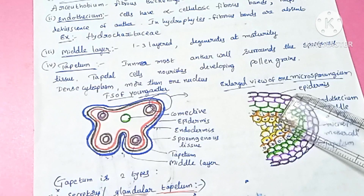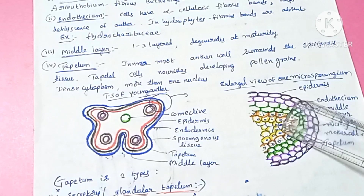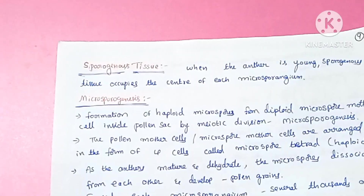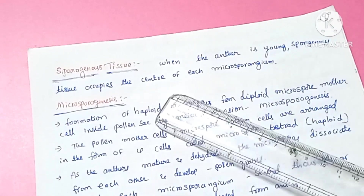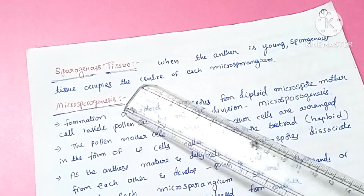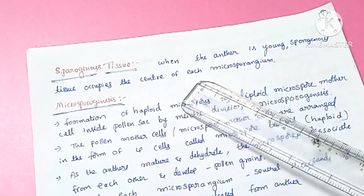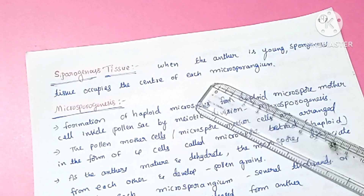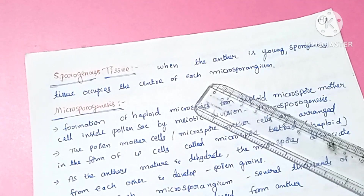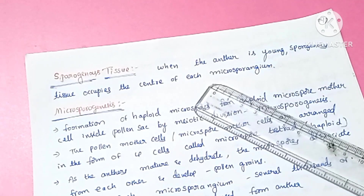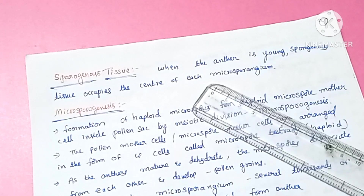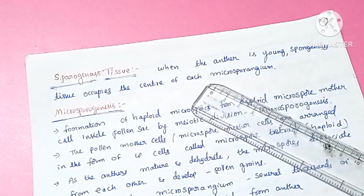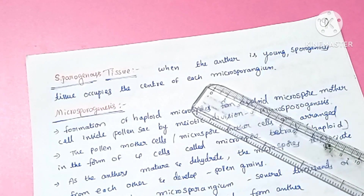The tapetal cells have dense cytoplasm and more than one nucleus — that is, a polyploid condition. When the anther is young, the sporogenous tissue occupies the center of each microsporangium.